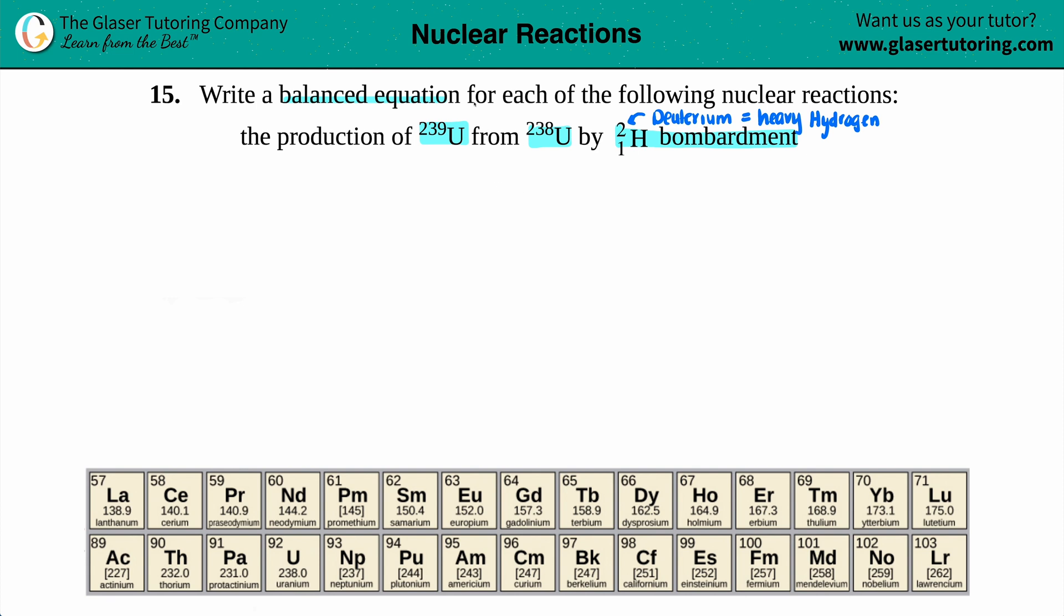It seems like we're going to be producing something. We have to undergo the production of uranium-239, and if you're producing U-239, that means it's going to be one of your products. You're producing it from U-238, so this has to be your reactants because that's your starting material.